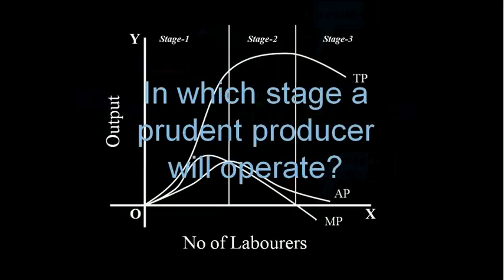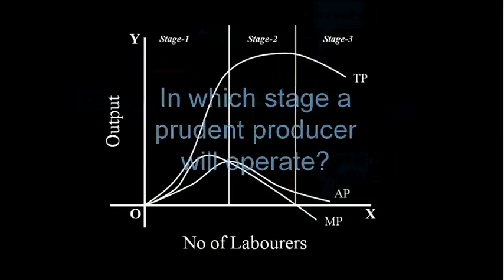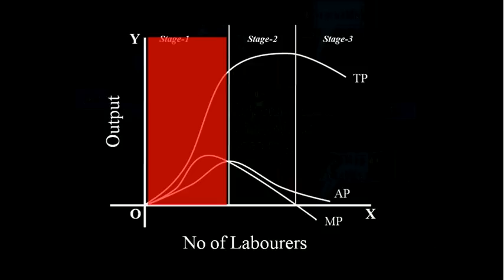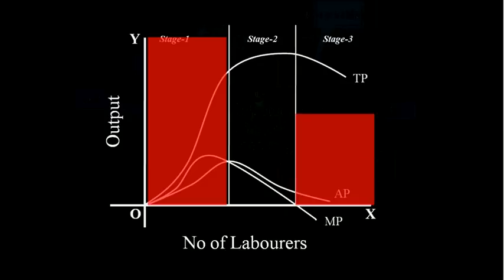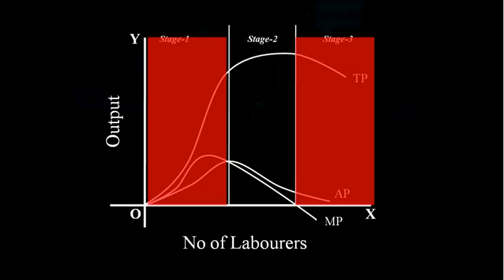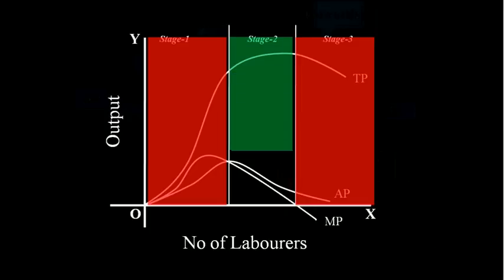In which stage will a prudent producer operate? In the first stage, the marginal product of the fixed factor is negative. In the third stage, the marginal product of labor is negative. Only in the second stage are the marginal products of both fixed and variable factors positive, so a producer will operate only in this stage. How many units of variable factor the producer will employ depends upon the price of the variable factor, that is, labor.